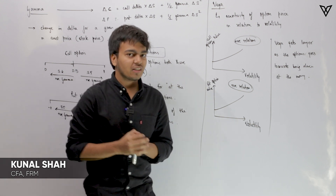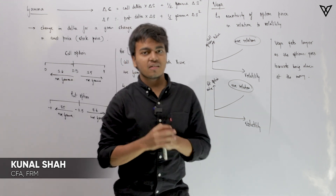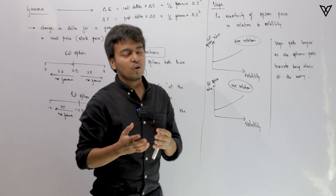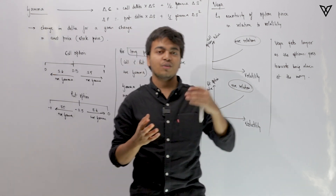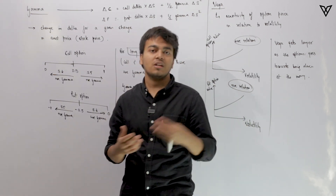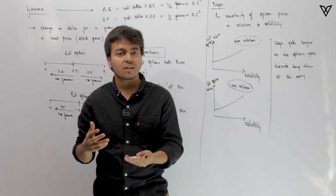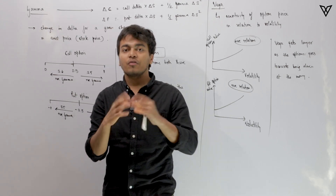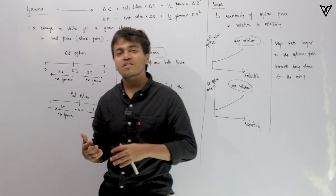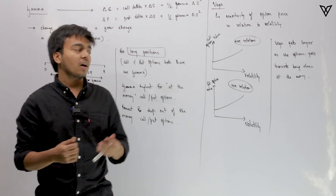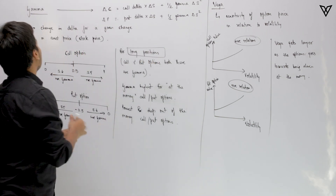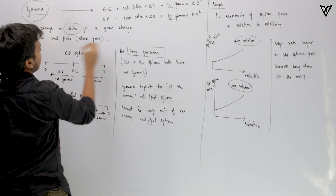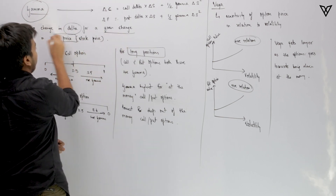The next option trick that we're going to understand is gamma. For fixed income, we all know that duration was the first order differentiation we really learned, and then convexity came later. In the very same way, we first understand about delta for options and then move towards gamma. So what exactly is gamma? Gamma is the change in delta for a given change in asset price.